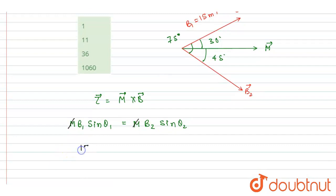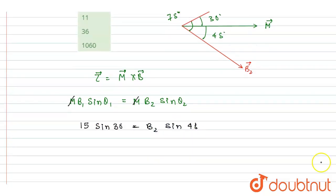B1 is 15 milliTesla, sin 30 degrees equals B2 sin 45 degrees. After solving, you will get B2 equals 15 into 2 divided by sin 45, which is 15 by root 2, that is nearly equal to 11 milliTesla.